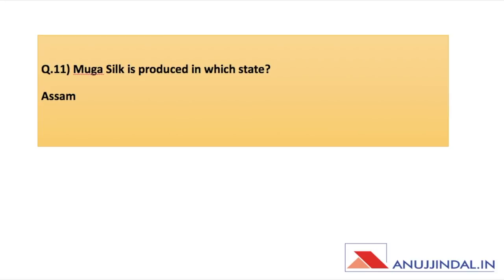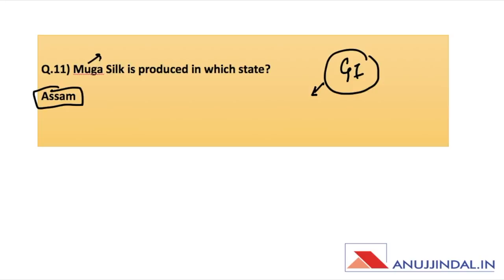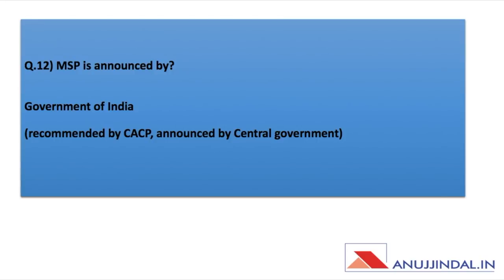Muga silk is produced in which state? This question came somewhat from current affairs because a geographical indication tag is being given to Muga silk, and it is associated with Assam. Next, MSP is announced by whom — the exact question is unknown, but Minimum Support Price is recommended by CACP, the Commission for Agriculture Cost and Prices, and is recommended by the Government of India.